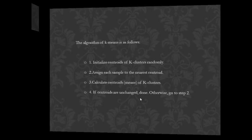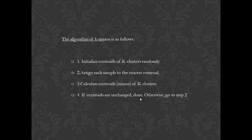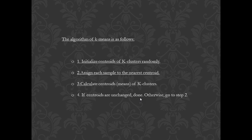This entire process can be shown algorithmically as the following steps. First, initialize each centroid to k-clusters randomly. The next step is to assign each sample to the nearest centroid. The third step involves calculating the centroid, so the means of the k-clusters involved. The fourth and final step is: if the centroids are unchanged, then the entire segmentation process using k-means clustering is done; otherwise, go back to step two.